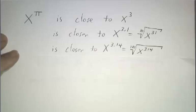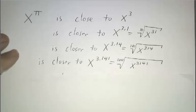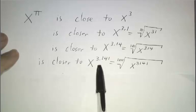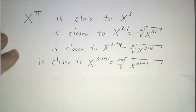x to the 3.14 is the hundredth root of x to the 314th. x to the 3.141 is the thousandth root of x to the 3141. And so if you want to know what x to the pi is, you come up with fractions that get closer and closer and closer to pi and take x to those powers.